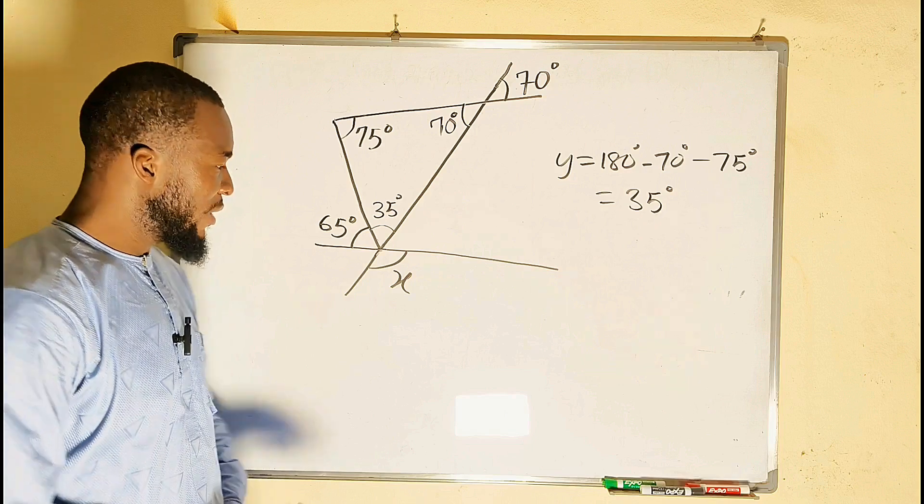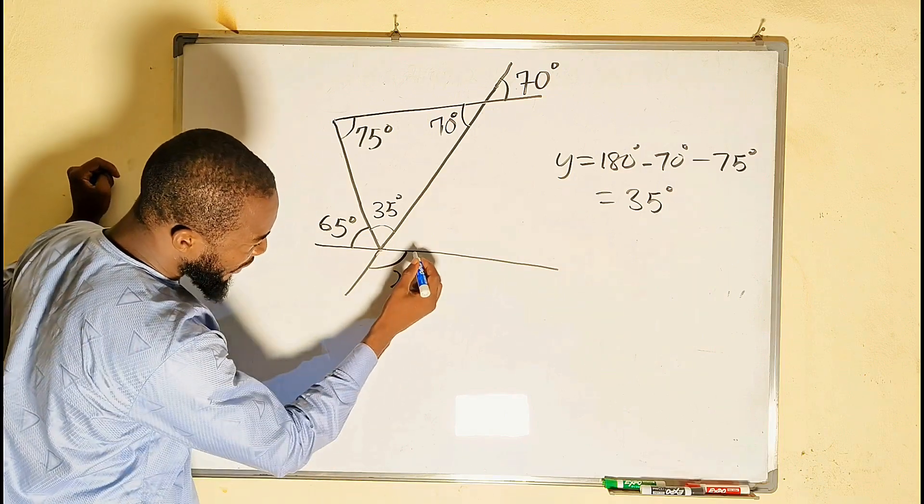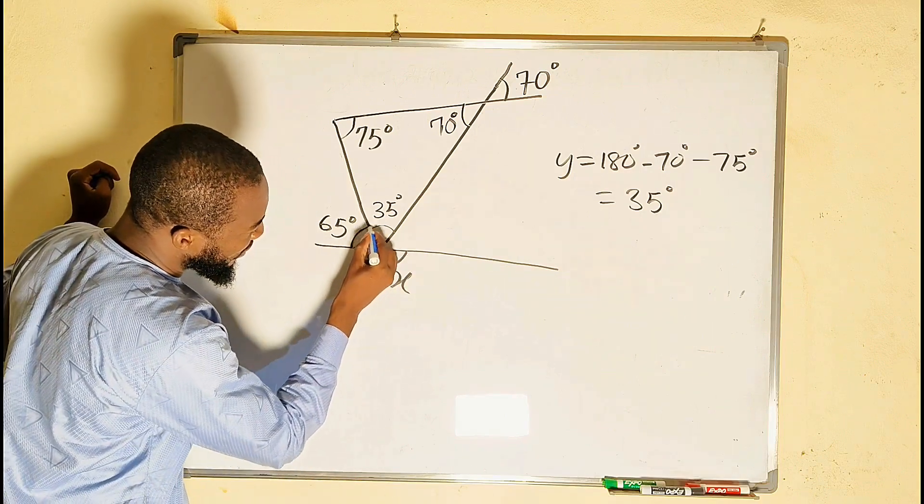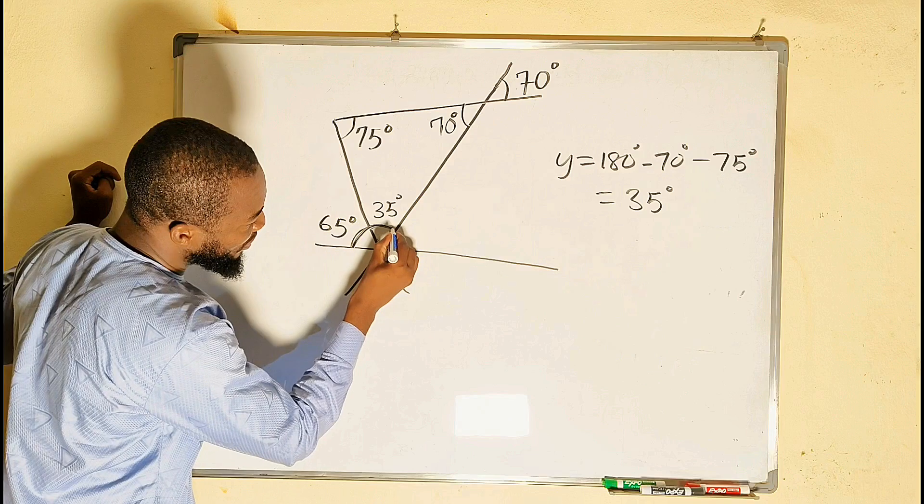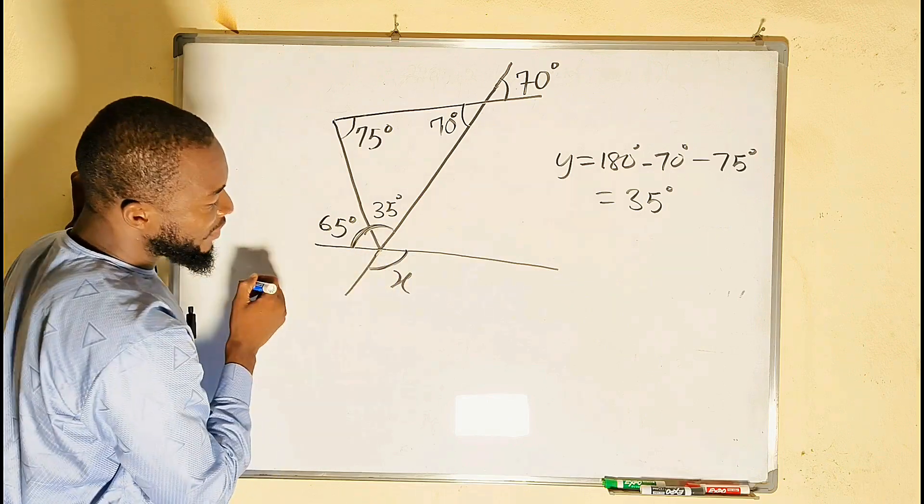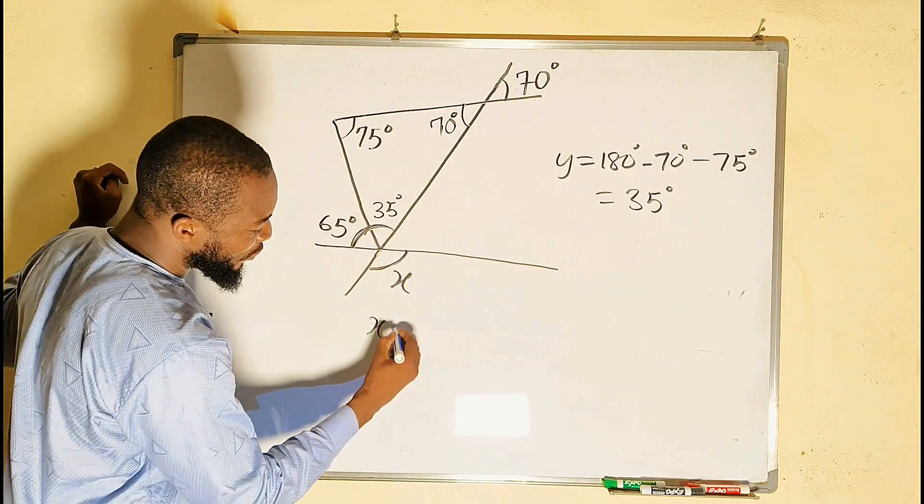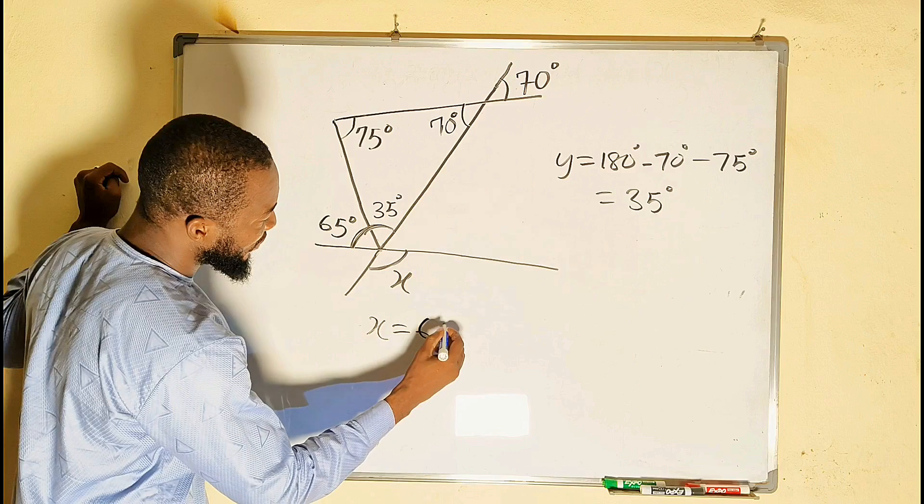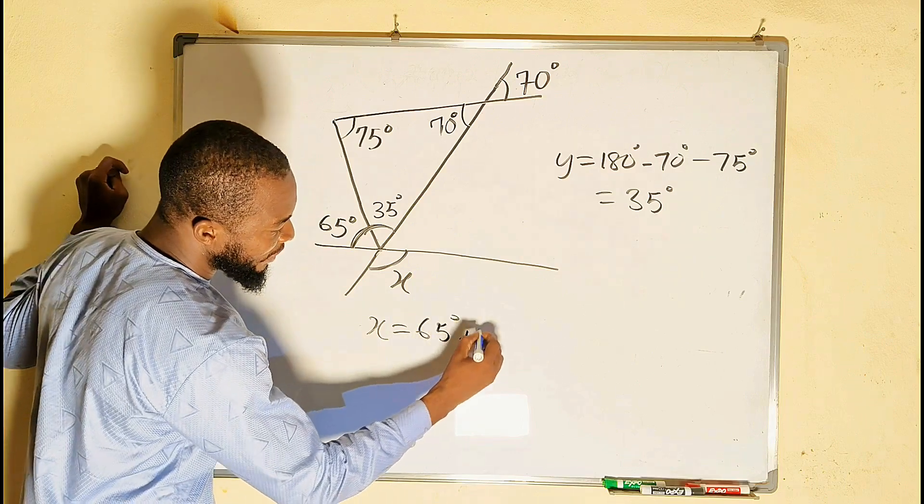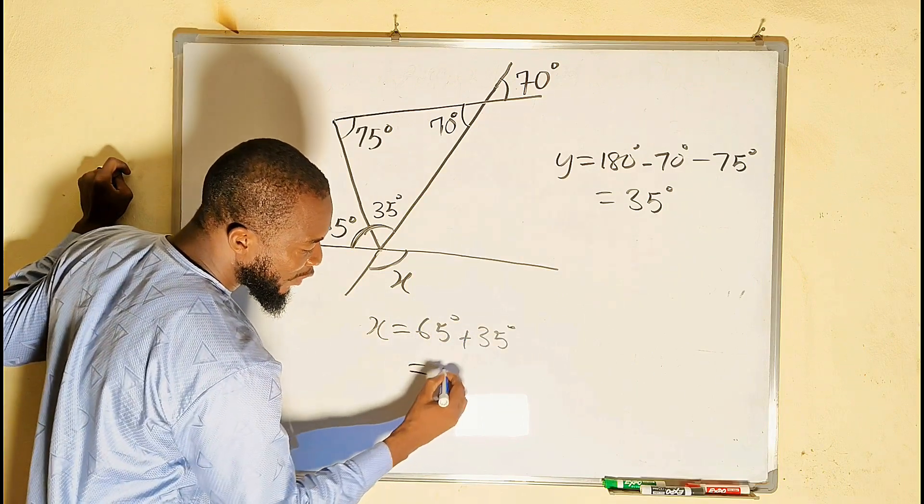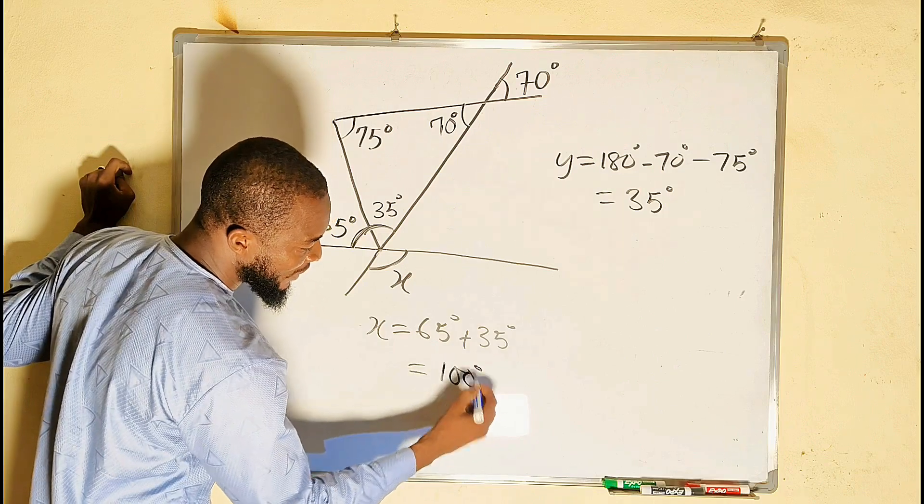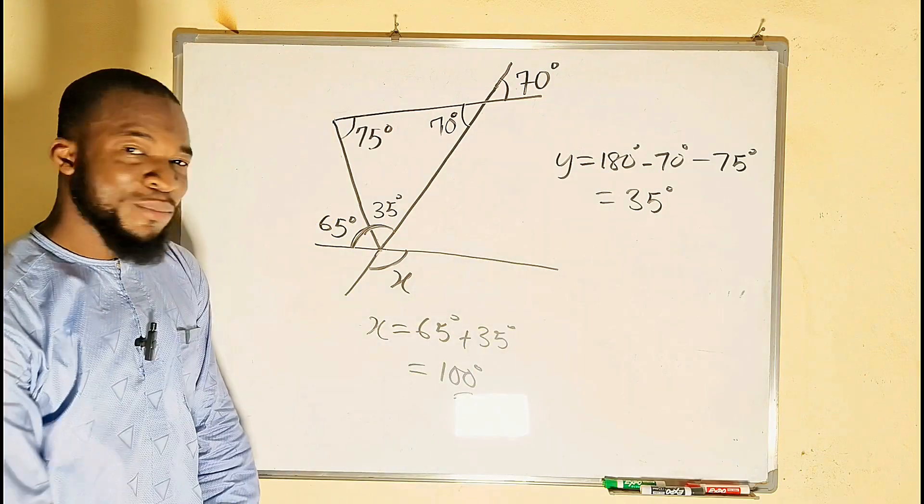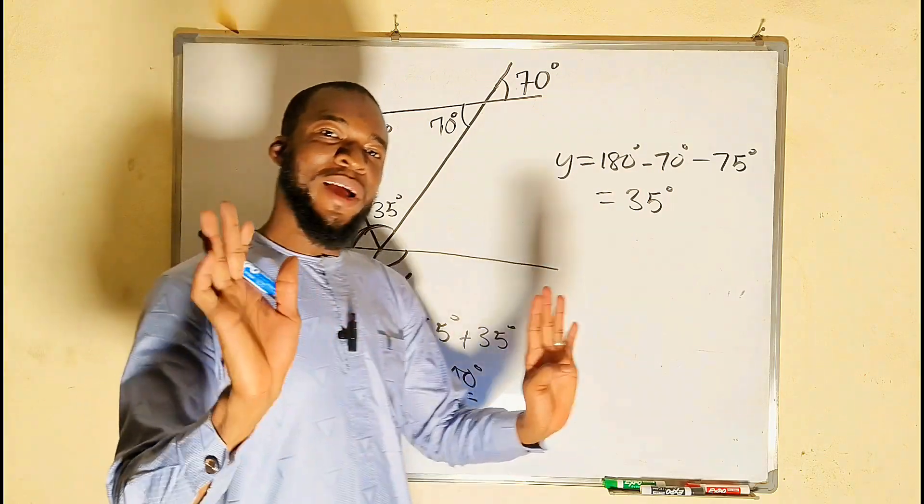Therefore, if you observe, x and this other angle will be the same. So these two angles are the same. So therefore, x will be equal to the sum of this 65 and 35 degrees, and this is equal to 100 degrees. Simple as that. Bye bye.